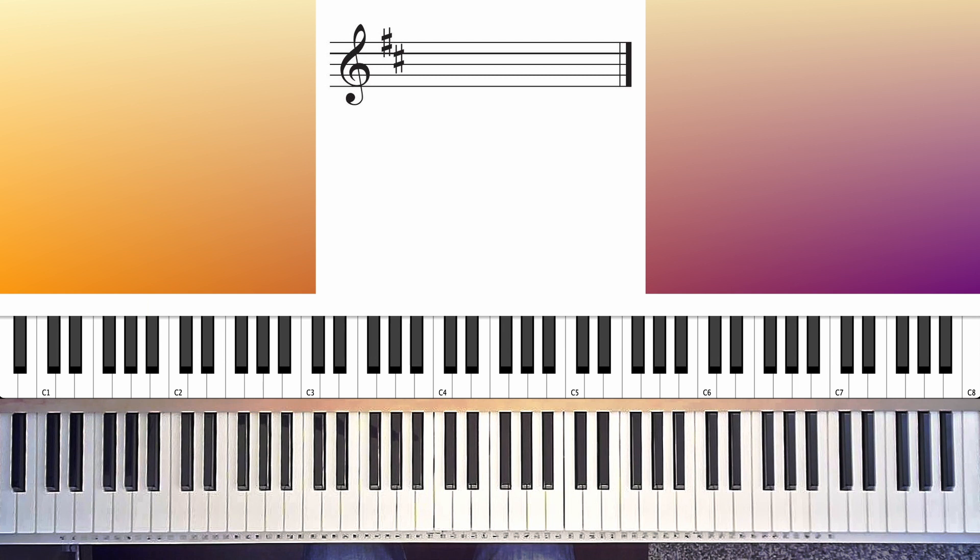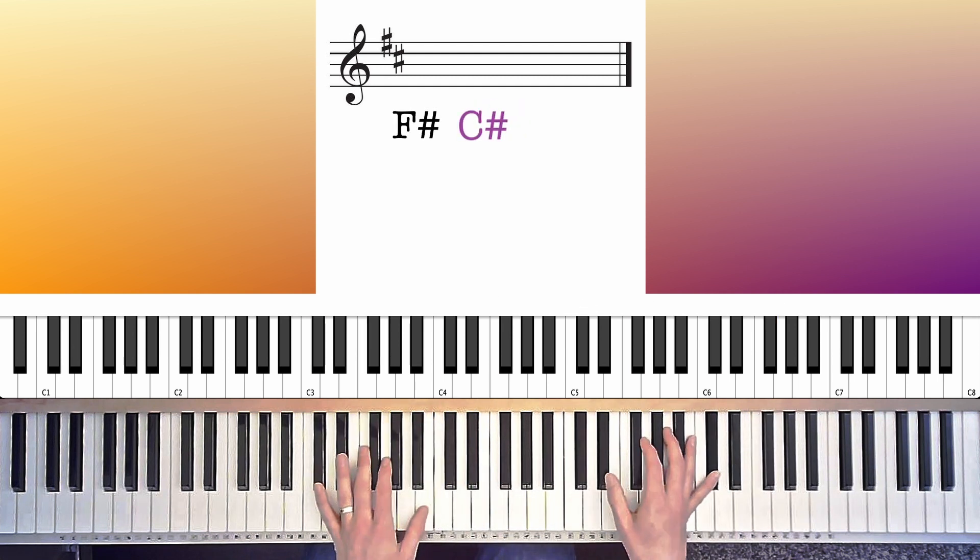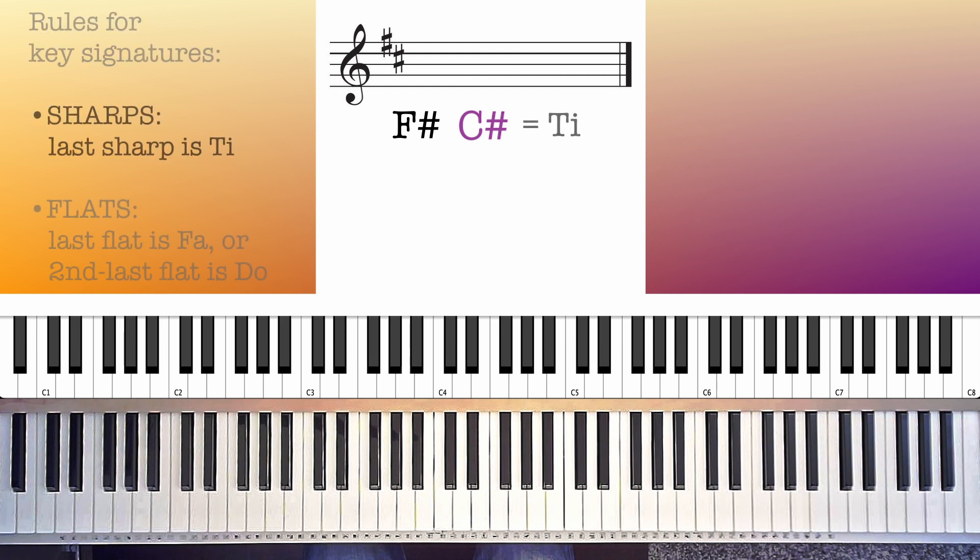Here we have a staff with a treble clef and a key signature containing two sharps. First on the top line is an F sharp and then a C sharp on the third space up. So C sharp is the last sharp and the rule says the last sharp is T. Now, to find Do, there are two facts to keep in mind. One, from T to Do will always be a half step, not a whole step.